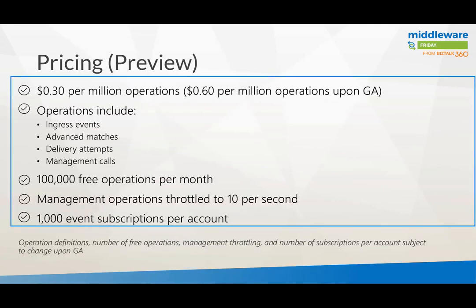On pricing: like any Azure service, it's pay-as-you-go. During preview it's about 30 cents per million operations. It will be 60 cents once it goes GA — a small price bump. A billion events or operations will run around $300 now and $600 later. Operations include all events taken in, matching with filters, delivery of your events, and management calls. The first 100,000 operations are free per month.